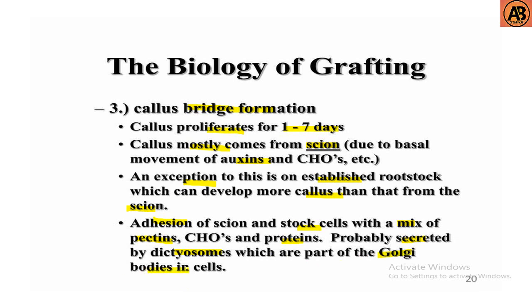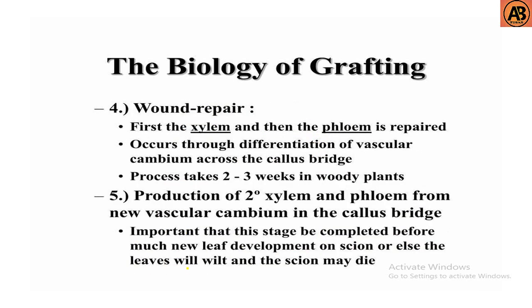The fourth stage is wound repair. First the xylem and then the phloem are repaired through the differentiation of vascular cambium across the callus bridge. This process takes two to three weeks in woody plants.